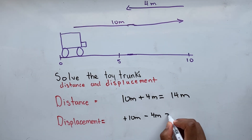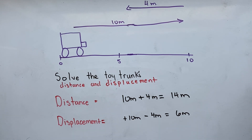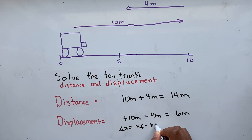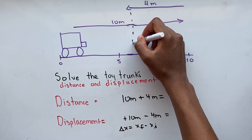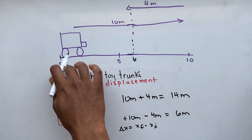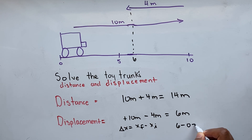This gives a total of 6 meters for our displacement. Another way we can do it is using the formula delta x equals our final position minus our initial position. Our final position is 6 meters, and our initial position is 0. So we plug in the values: 6 minus 0 gives us our displacement, which is 6 meters.